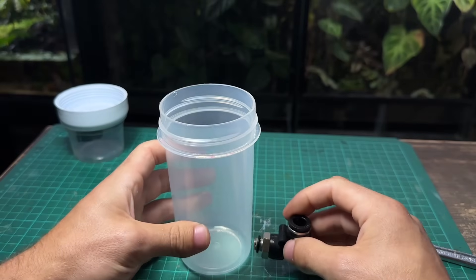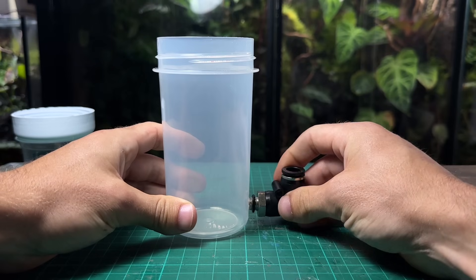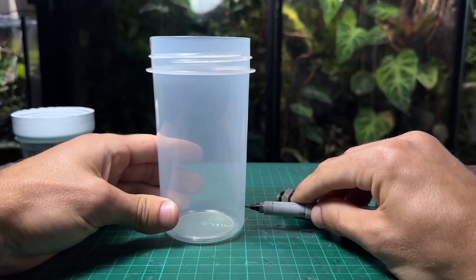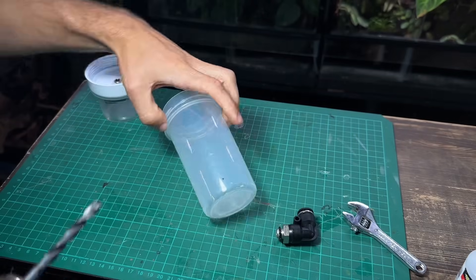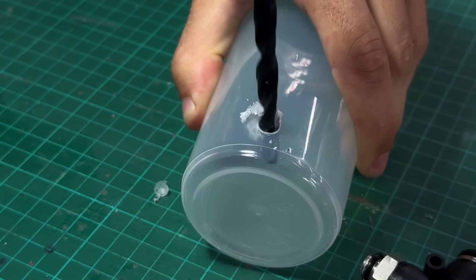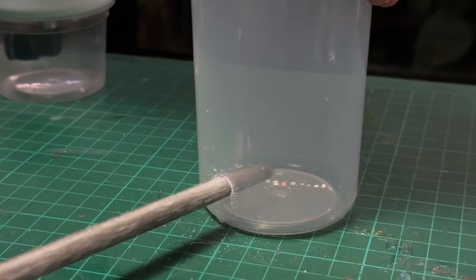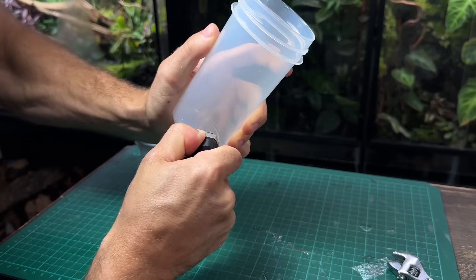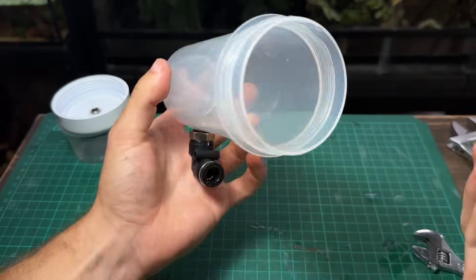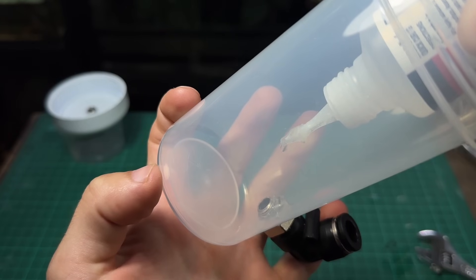Now I'm going to attach the push fitting at the bottom of the filter which is where the water will flow out from. I'm trying to get it as low as possible without it touching the ground. I'm now going to repeat the same process of drilling the hole, filing it out and then screwing in the push fitting. I'll also add a few more drops of super glue to keep it locked in place.